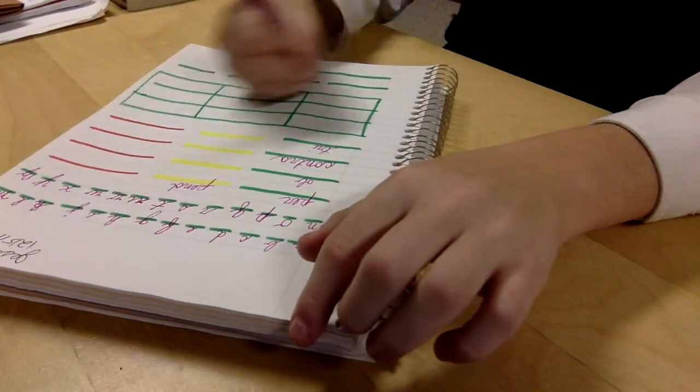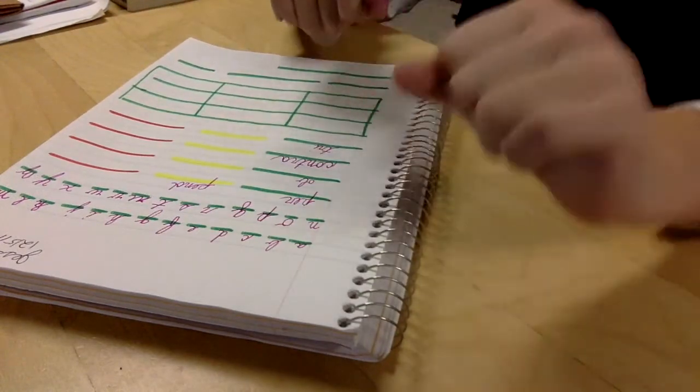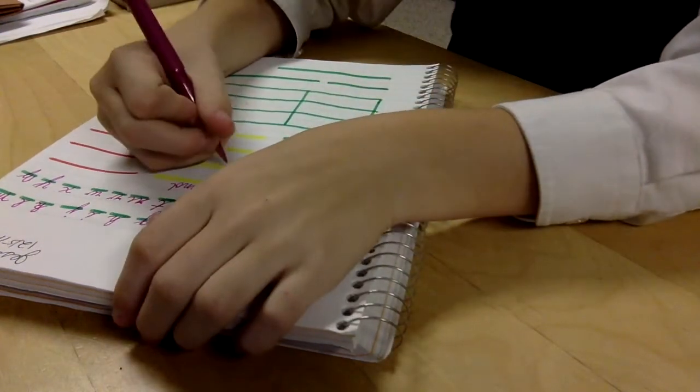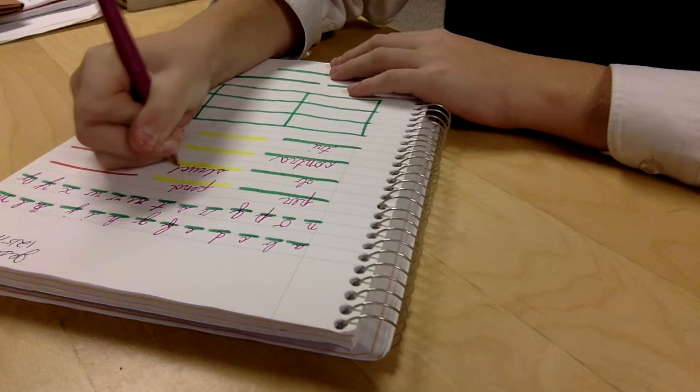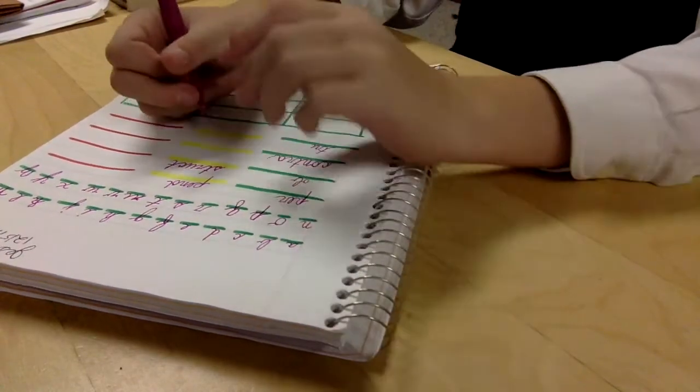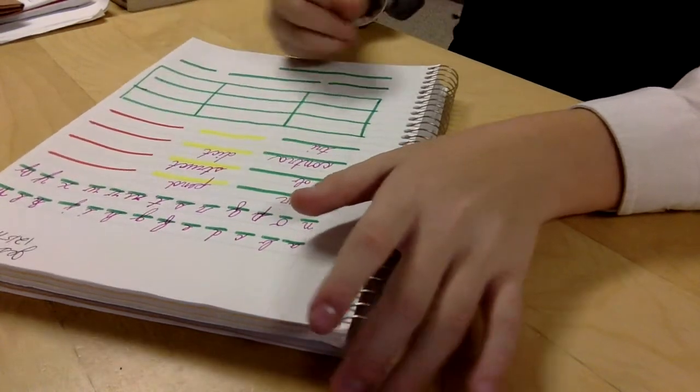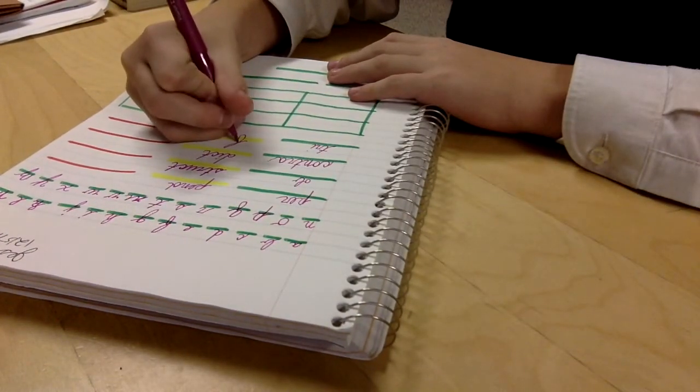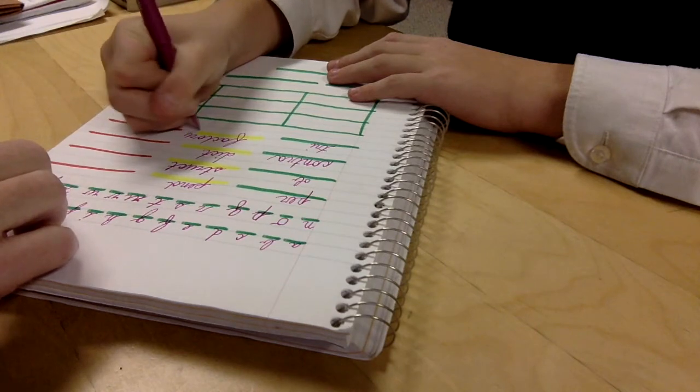Let's move on to roots. The root that means to hang? Pend. How about to build? Struct, a structure. And to speak or to say? Dict. And to make? Fact, you make things in a factory.